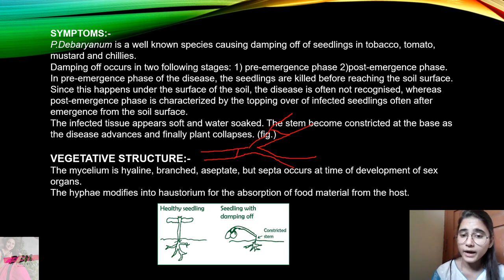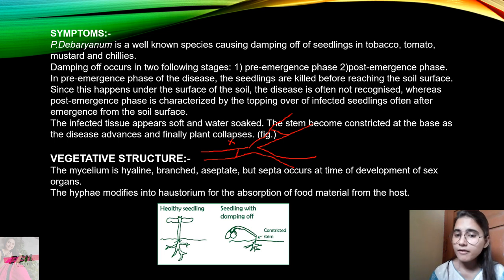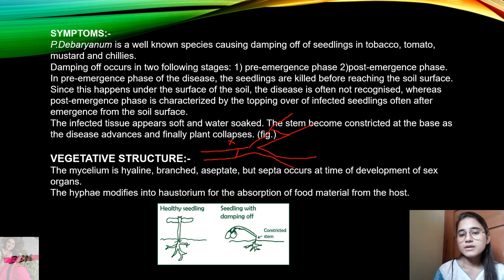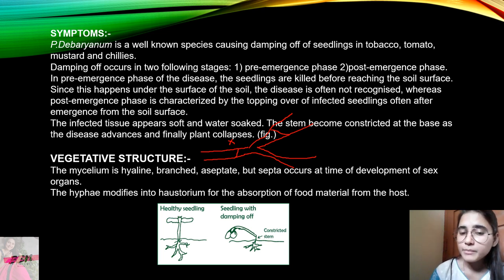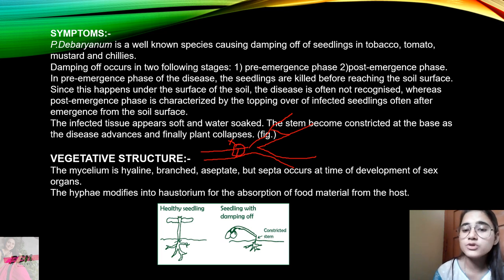The septum is not present in the vegetative mycelium, but when will the septum develop? The septum develops at the time of development of sexual organs. Wherever the sexual organs will develop, a septum will develop to separate them from the rest of the hypha.